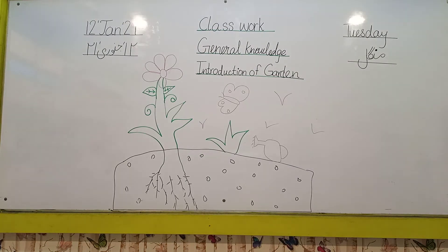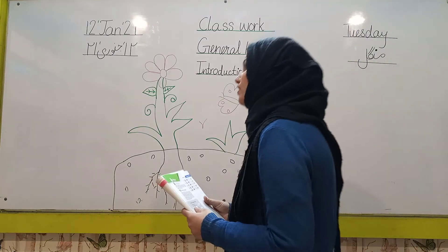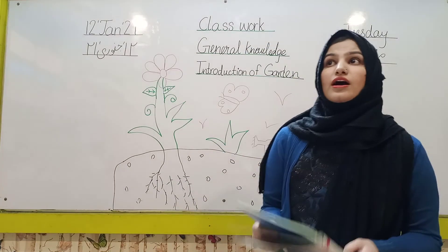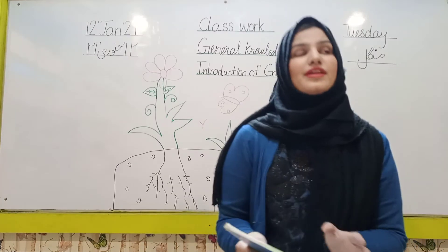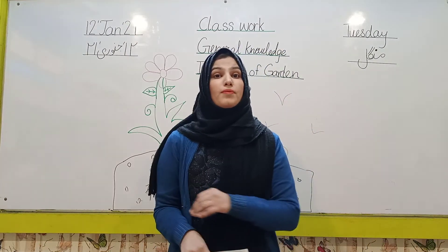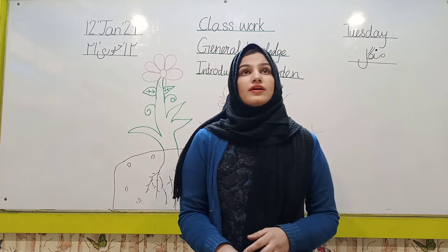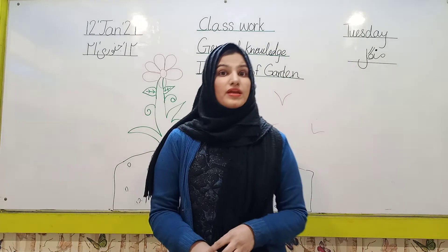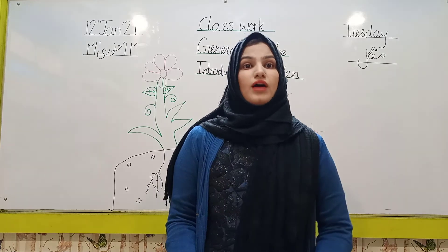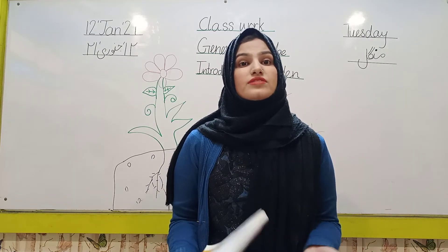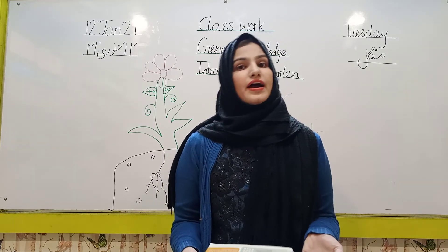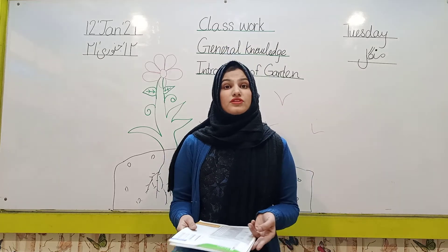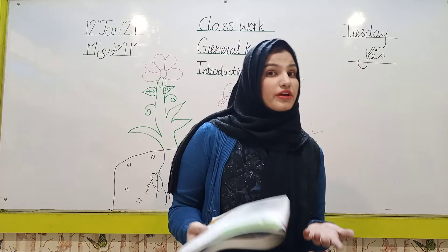A garden is a beautiful place. The color of the garden is green. The color of the grass in the garden is green. There are so many trees and leaves in the garden. The color of the leaves can be light green, dark green, or orange.